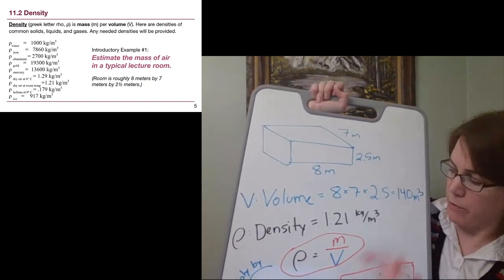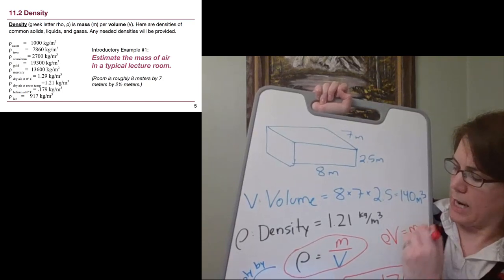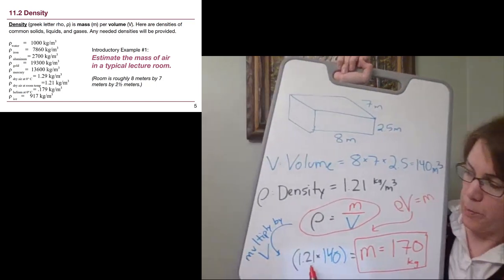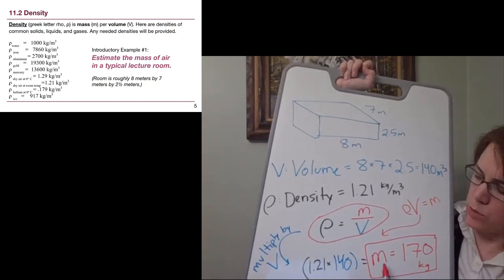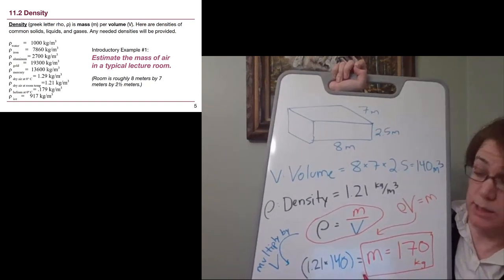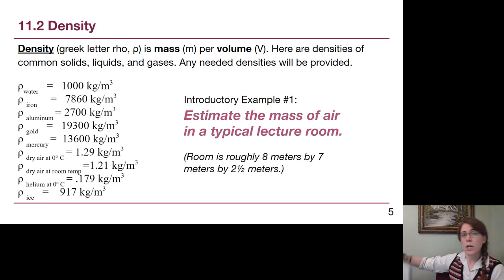The equation that we had on the previous slide was density is equal to mass over volume. So if we multiply both sides by volume, we get density times volume equals mass. We have density 1.21 times the volume 140 is equal to the mass. And so we got, when we rounded, 170 kilograms.